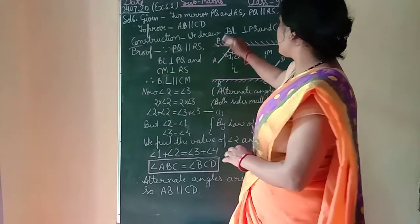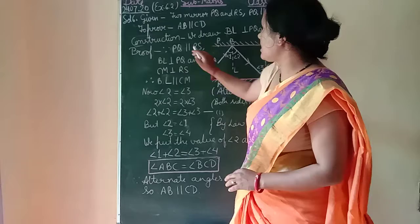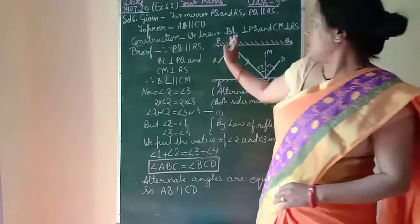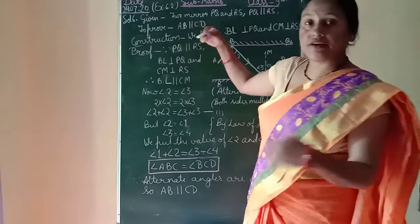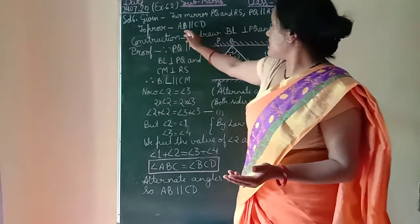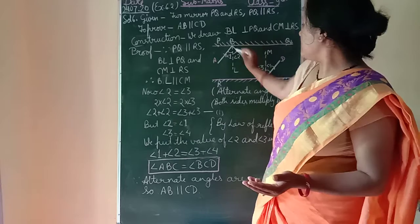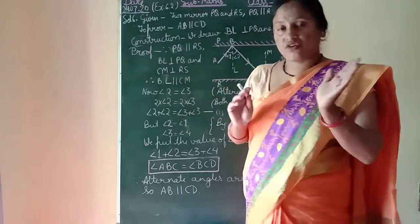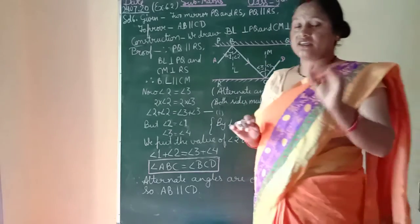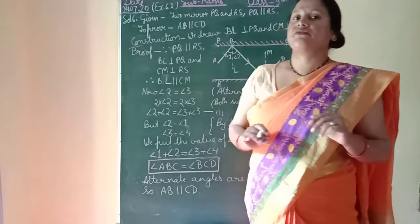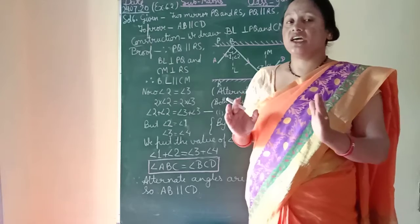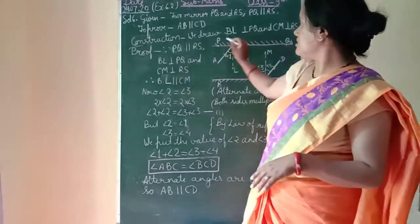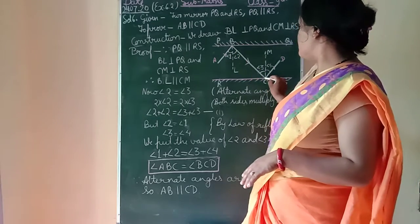Now we will start the formal proof. Given: PQ is parallel to RS. To prove: AB is parallel to CD. For the construction, we need perpendiculars — we will draw perpendiculars at the points of reflection, at point B and at point C.